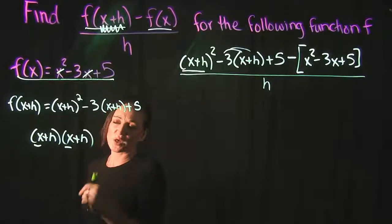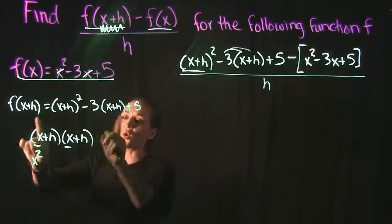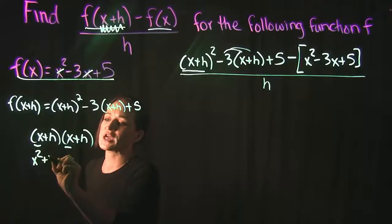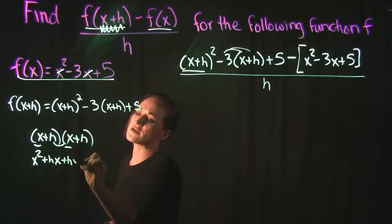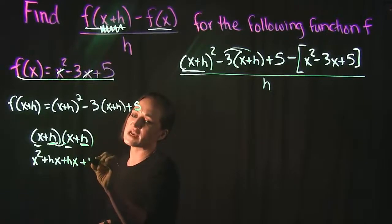But going through this real quickly using foil: x times x is x squared. O stands for the outside, so x times h, or h times x, is hx. The inside gives us another hx. And L stands for last, that's h times h, which is h squared.